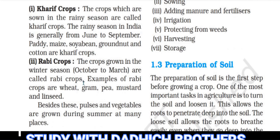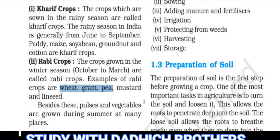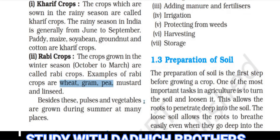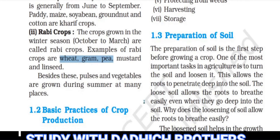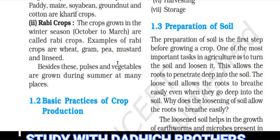The crops grown in the winter season are called Rabi Crops. The winter season in India is generally from October to March. Examples of Rabi Crops are wheat, gram, pea, mustard and linseed. Besides these, vegetables are also grown during summer at many places.